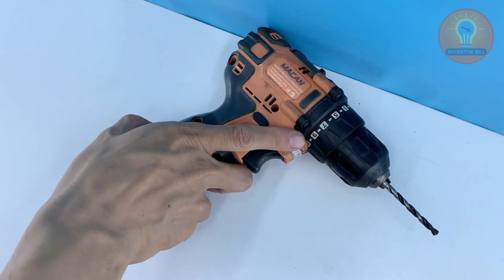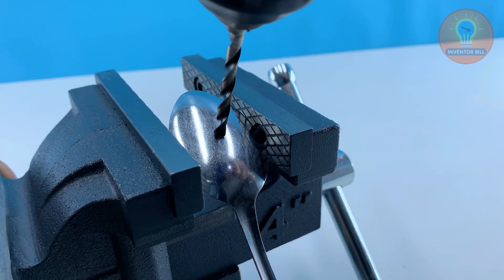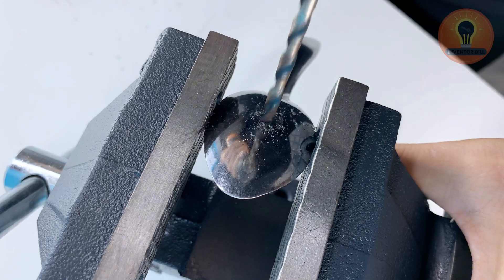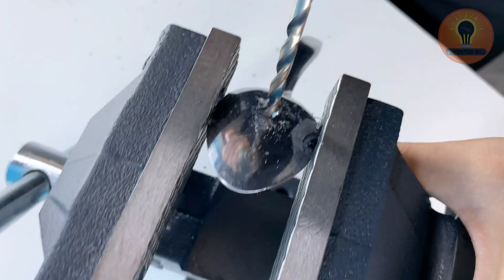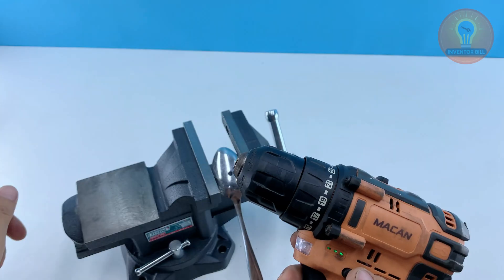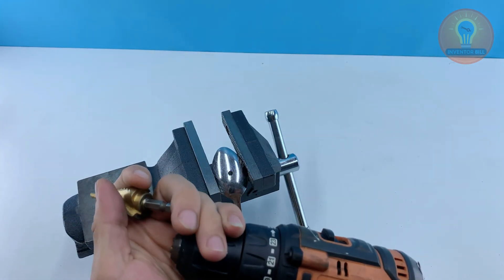Now bring in your step drill bit and place it right in the center of the spoon. Drill slowly and let the bit do the cutting. Stainless steel is tough, so steady pressure works better than forcing it.